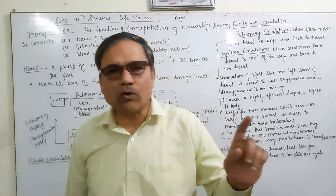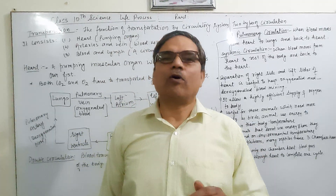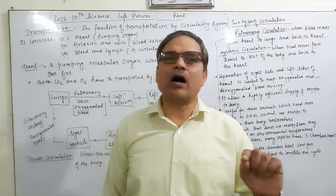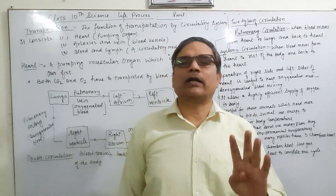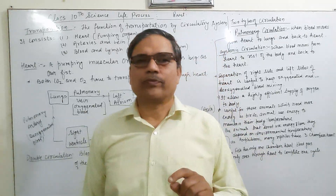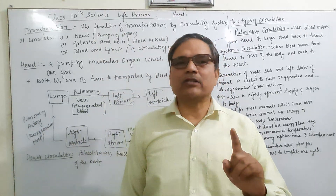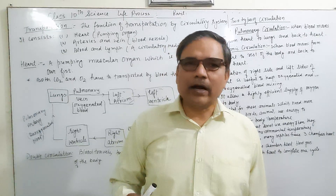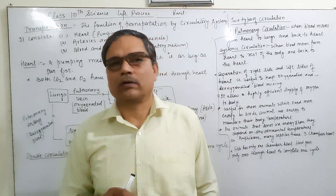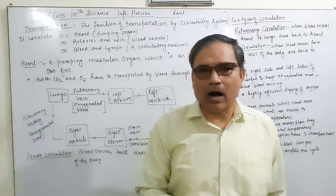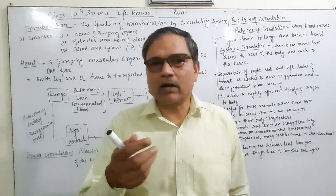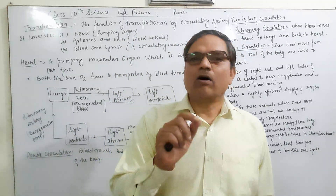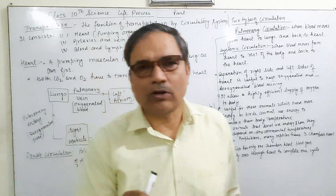The second type is systemic circulation. When blood is passed from the heart to all parts of the body and then returns back to the heart, that is systemic circulation. The heart releases pure oxygenated blood to the body, and receives impure deoxygenated blood back. If the lungs receive or supply the blood, that is pulmonary circulation; if the body receives or supplies the blood, that is systemic circulation.